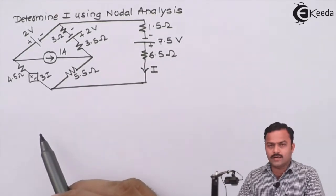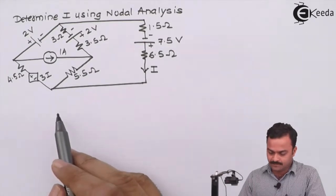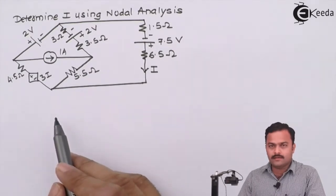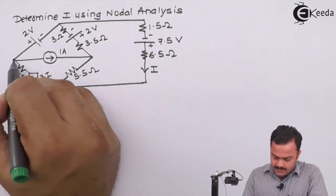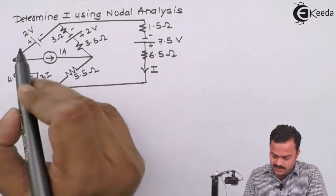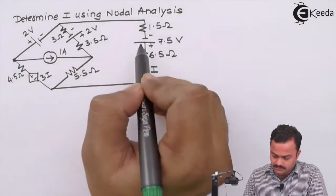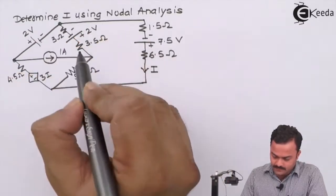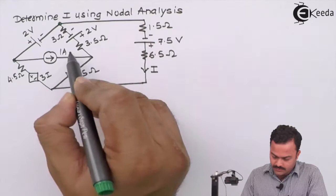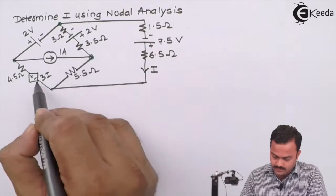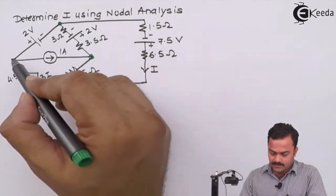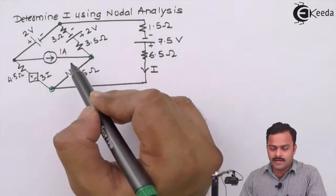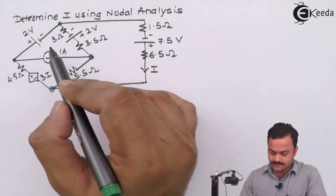Step number one is to mark all the nodes present in the circuit. Notice the points where three or more branches are connected together. Three branches are connected to each of these nodes, so the corners of this quadrilateral are the nodes.